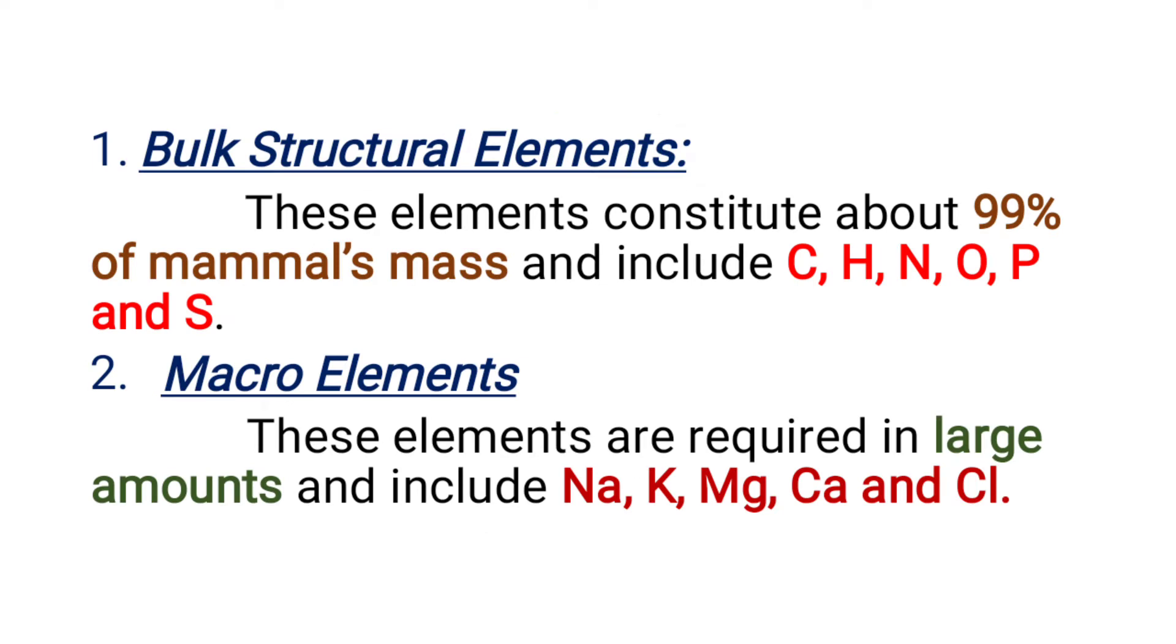First, bulk structural elements. As we know, bulk means huge quantity. These elements constitute about 99% of mammal's mass and they include carbon, hydrogen, nitrogen, oxygen, phosphorus, and sulfur.